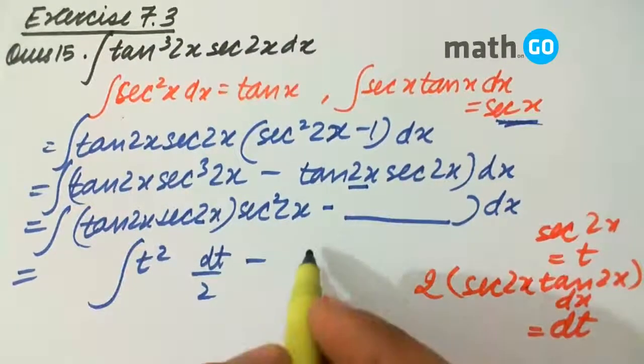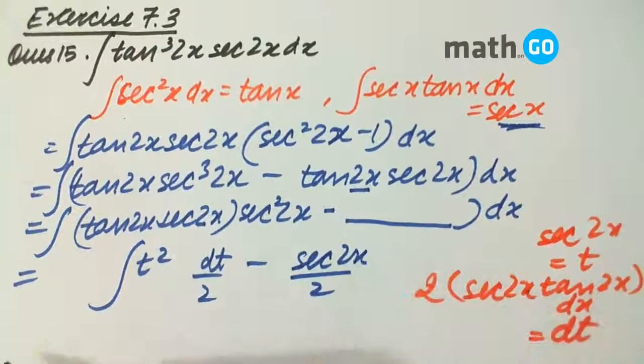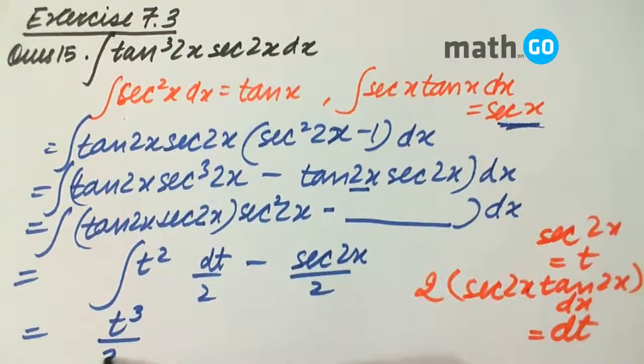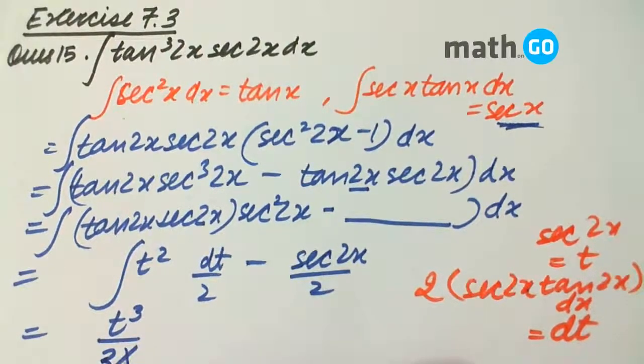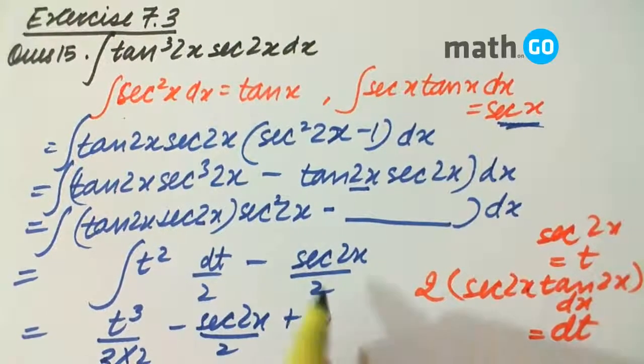Minus square integral, you already know, that is sec 2x by 2. So, we will get t cube by 3 into 2 minus sec 2x upon 2 plus c.